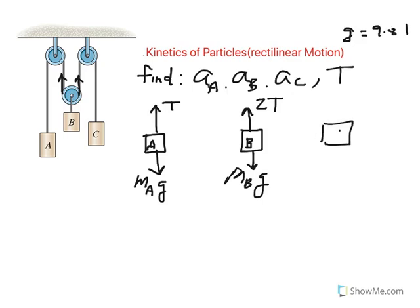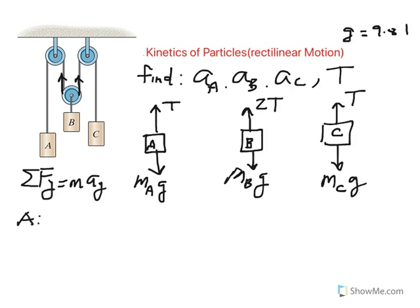And then finally, we're going to look at C. The tension is just T, one cable, and one segment, and then this is mass of C times G. The equation of motion is simply sum of the forces in Y equal MAY. So I'm going to apply this equation to block A. For block A, taking this to be positive direction, we have T minus mass of A times G equal mass of A times the acceleration of A.